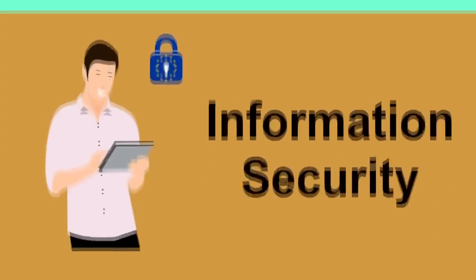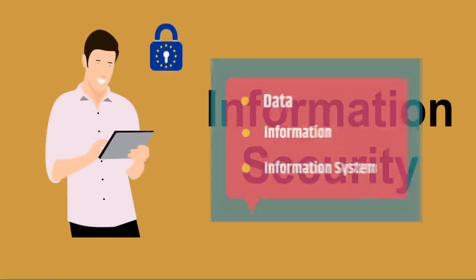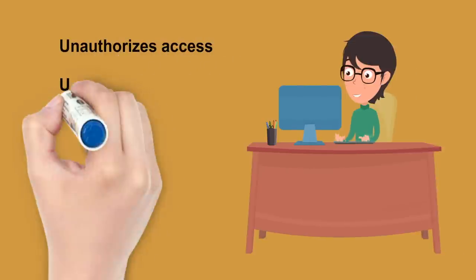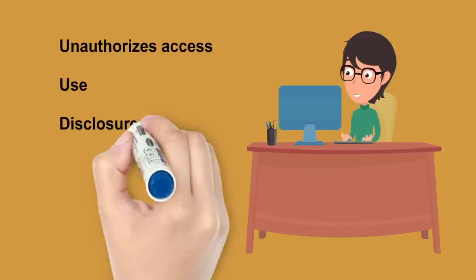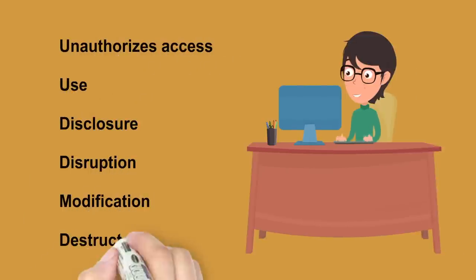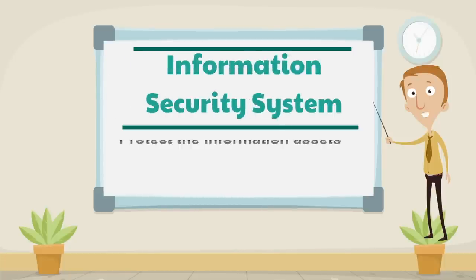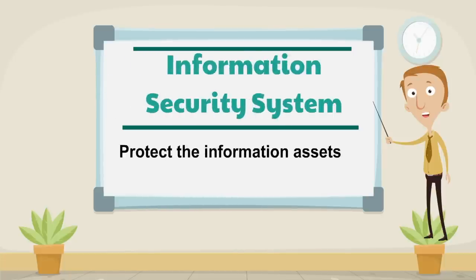Information security means protecting data, information and information systems from unauthorized access, use, disclosure, disruption, modification or destruction. Information security management is a process of defining the security controls in order to protect the information assets.